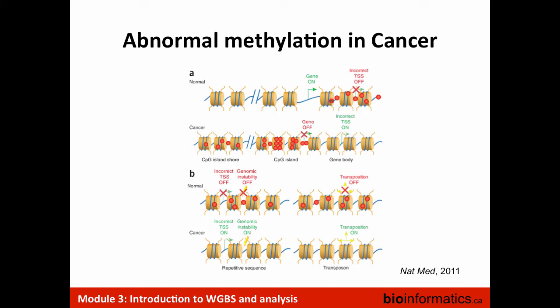Here's an example of the canonical way of thinking about methylation patterns in disease like cancer. In the normal state, you have promoters that are hypomethylated — so no methylation in the promoter — these are active genes, and there's some methylation within the gene being transcribed that prevents abnormal initiation. In the cancer or disease state, you might have abnormal methylation in the promoter, which turns the gene off, and the methylation within the gene is completely disrupted, leading to abnormal transcripts.